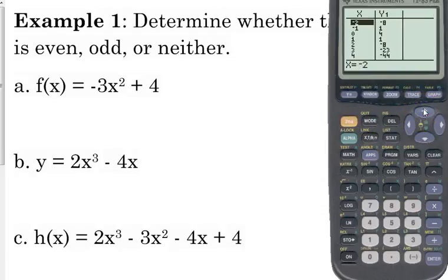The important thing I really want you to look at is the table. Make sure negative 3 is at the top and positive 3 is at the bottom. Look at those y values: negative 23 and negative 23, negative 8 and negative 8, 1 and 1. The opposite x values have the same y values. So that is an even function.